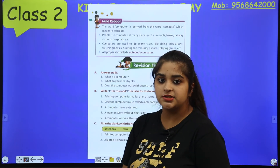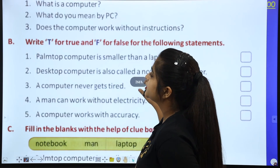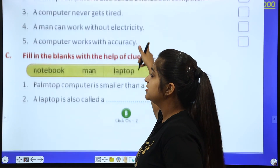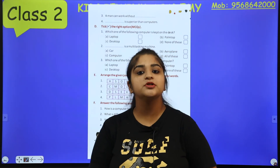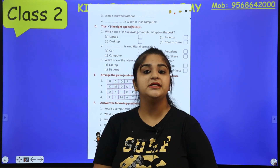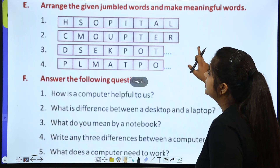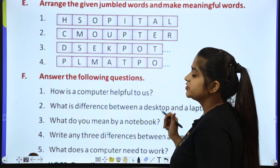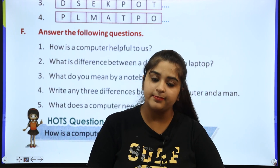The chapter is finished. Have you all understood? Understand it well. Here are some questions and answers — do them orally, not in a notebook. Then true/false, fill in the blanks — try to do these in your book. If the chapter is clear, you can easily do them. Tick the correct answer, arrange the jumbled words to make a meaningful word, and answer the following questions in your notebook. I will send you the assignment.